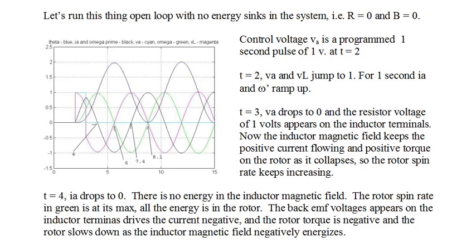For our first run, we'll have no energy sinks in the system — that is, the armature resistance R will be zero and the rotor damping coefficient B will be zero. The control voltage V_A is programmed to be a one-second pulse of one volt that occurs at T equals two seconds. Now let's see what happens as a result.